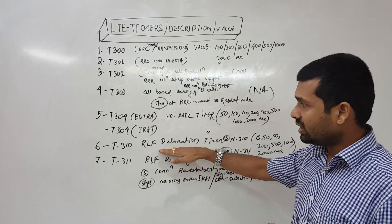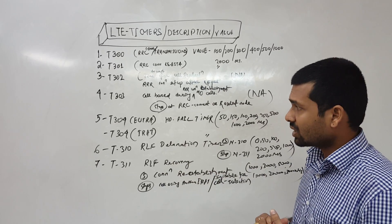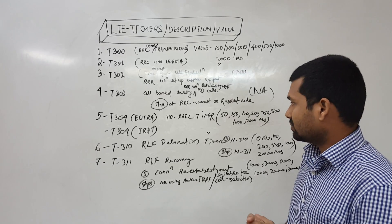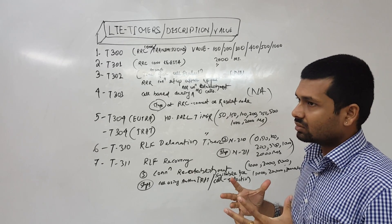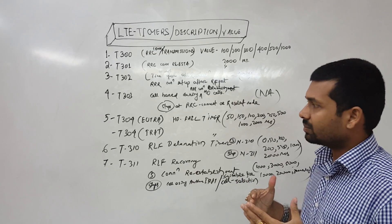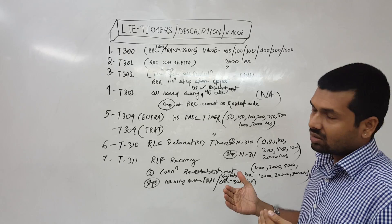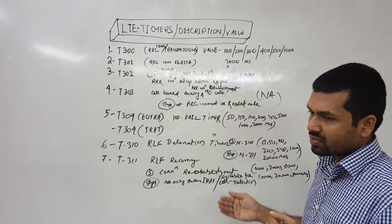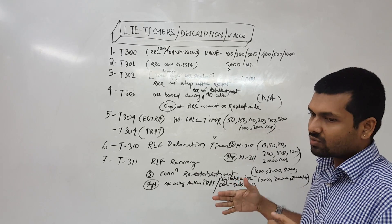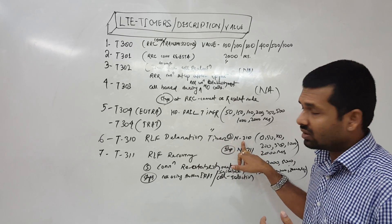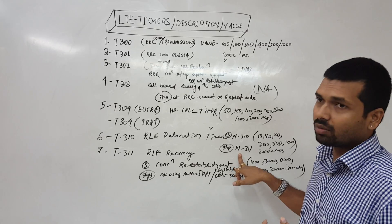And then next one is T310. This is radio link failure declaration. When the radio link failure timer starts and when it confirms that the radio link is failed now. Normally it starts at N310 and stops at N311.